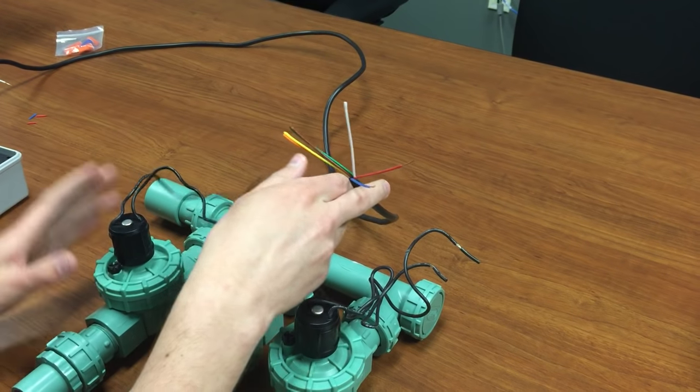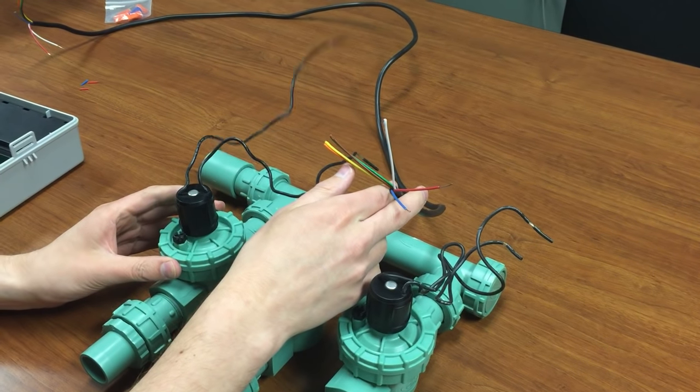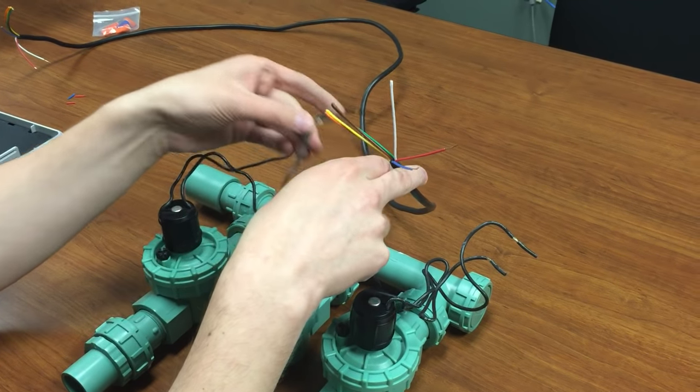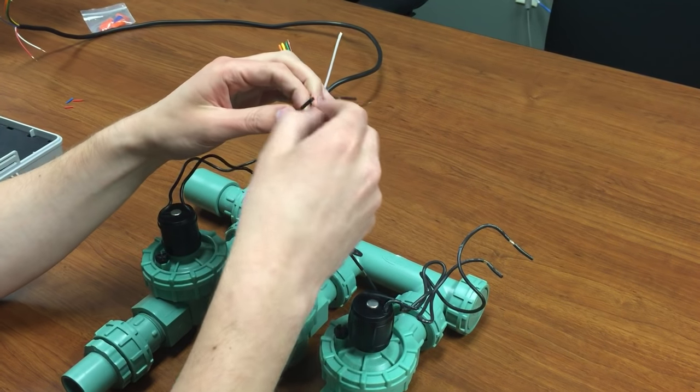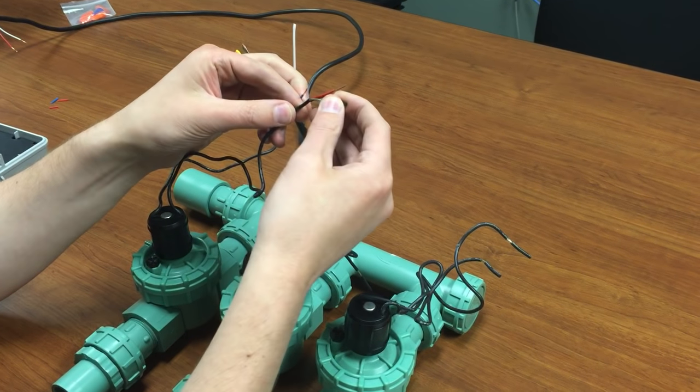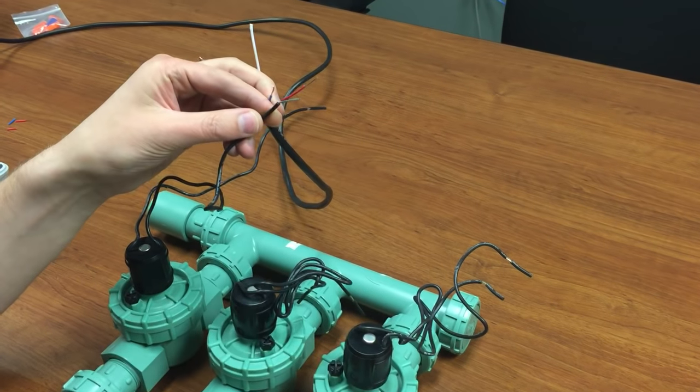On this one, let's assume that this valve right here is going to be our station one. So we could pick any one of these colored wires. In this case, we'll use blue and just pull off that small bit of wire insulation.